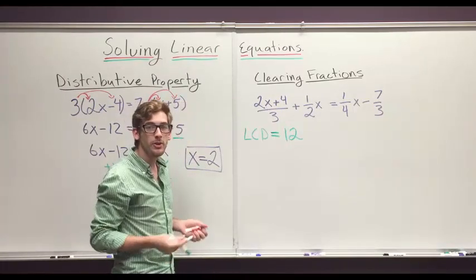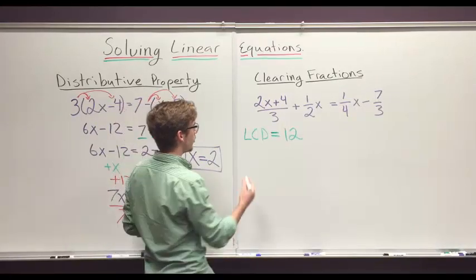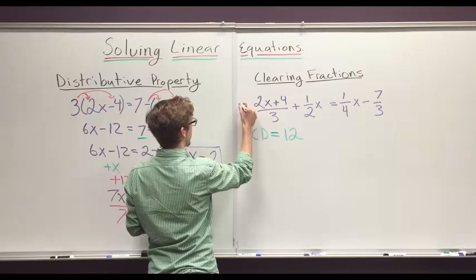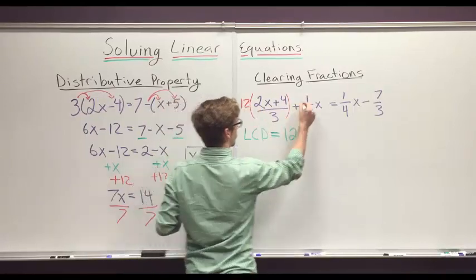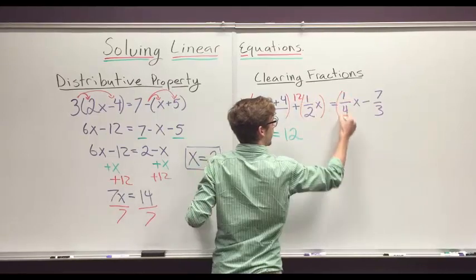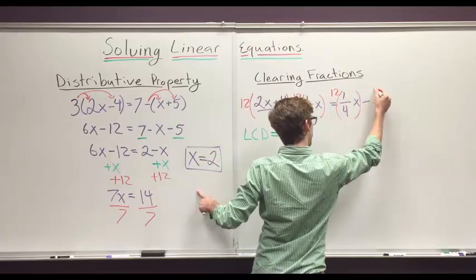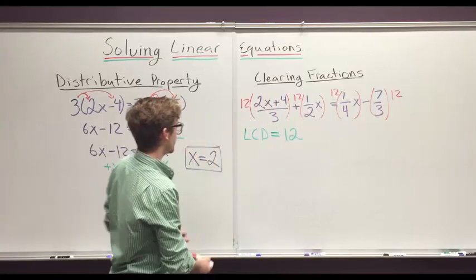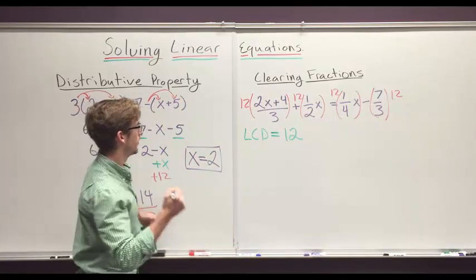Now the question is, what do we do with that? Well, we take our least common denominator and we multiply it by each piece. So we say this piece times 12, this piece times 12, this piece times 12, and this piece times 12. So what's our result whenever we multiply all of those pieces by 12?